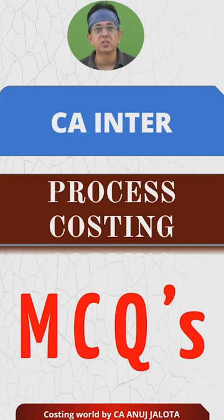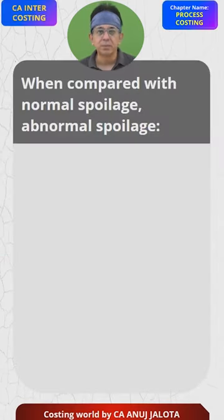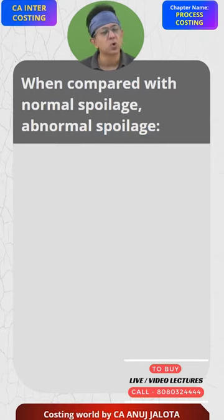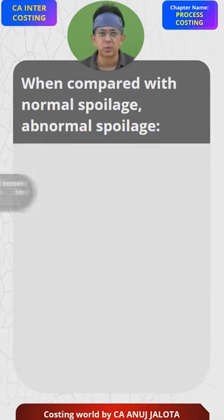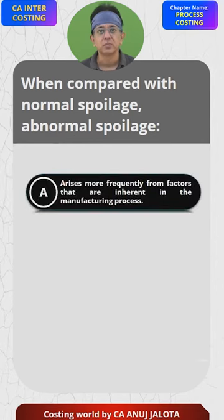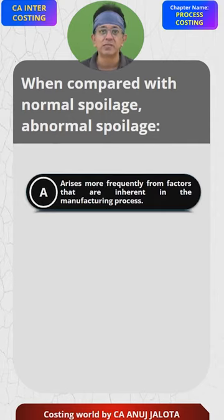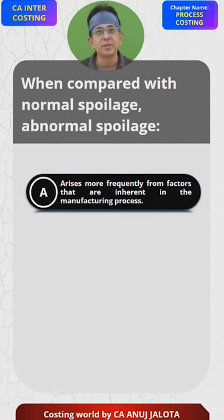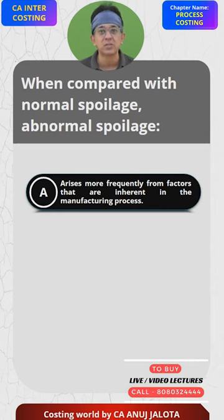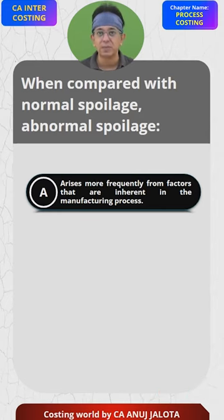CA Inter Process Costing MCQs: when compared with normal spoilage or normal loss, abnormal loss or abnormal spoilage arises more frequently from factors inherent in the manufacturing process. Obviously, that cannot be the answer. Normal loss is a loss built inside the system; abnormal loss is a loss that happens due to our mistake.